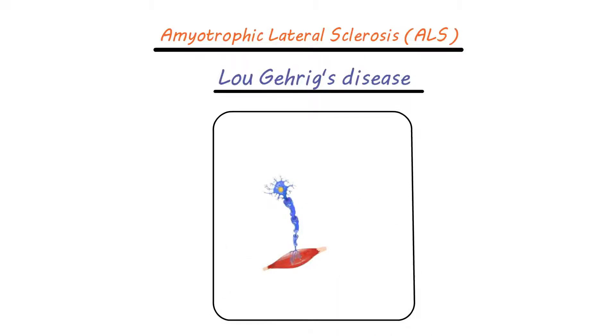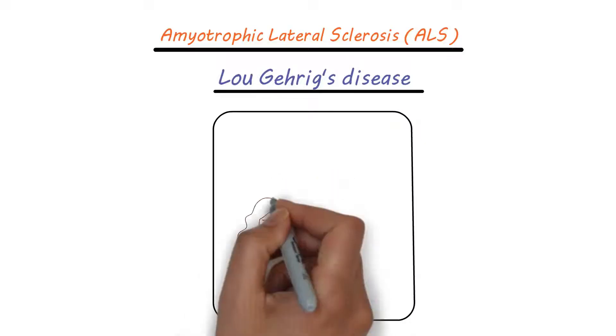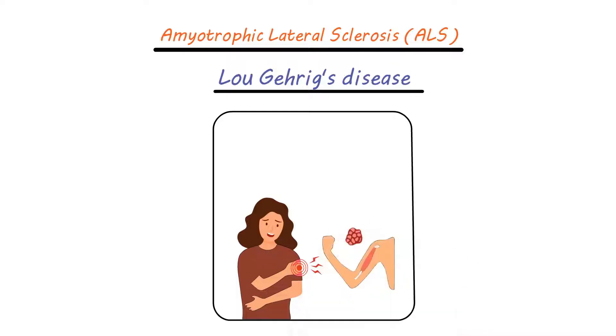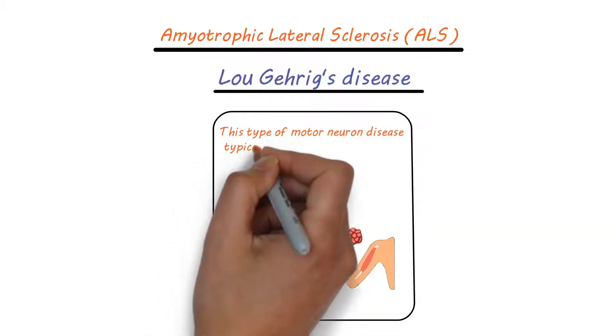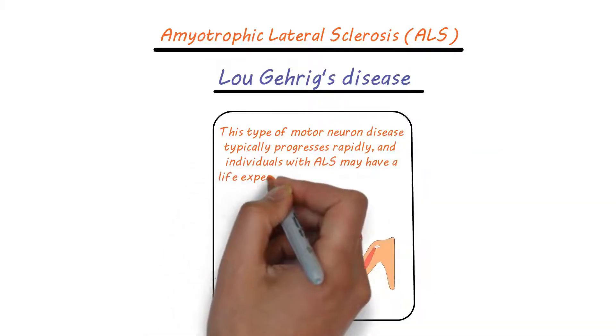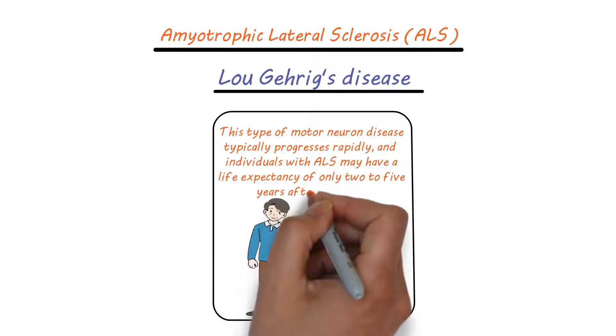The most common type of motor neuron disease is amyotrophic lateral sclerosis, ALS, also known as Lou Gehrig's disease. ALS affects both upper and lower motor neurons in the brain and spinal cord. As a result, individuals with ALS may experience muscle weakness, stiffness and shrinkage, atrophy, and eventually paralysis. This type of motor neuron disease typically progresses rapidly, and individuals with ALS may have a life expectancy of only two to five years after diagnosis.